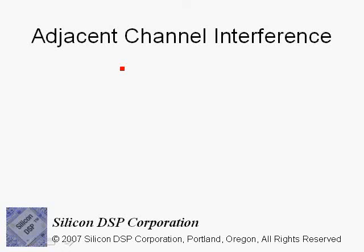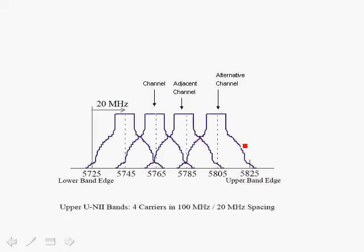In this section we will deal with adjacent channel interference and jammers in general and their effect on the performance of OFDM systems, using IEEE 802.11a as an example. Here we show the upper uniband for 802.11a, where each channel is separated by 20 megahertz. The desired channel is at 5.765 GHz, the adjacent channel is at 5.785 GHz, and the alternative channel is at 5.805 GHz.